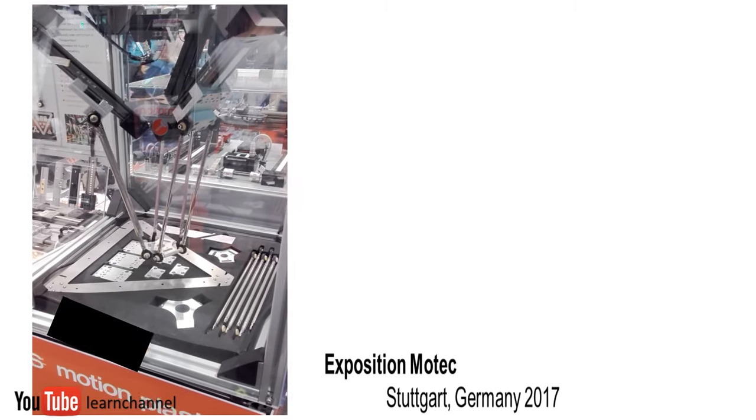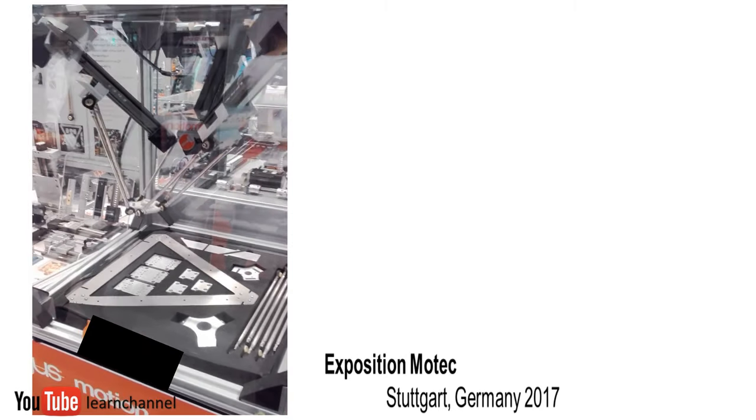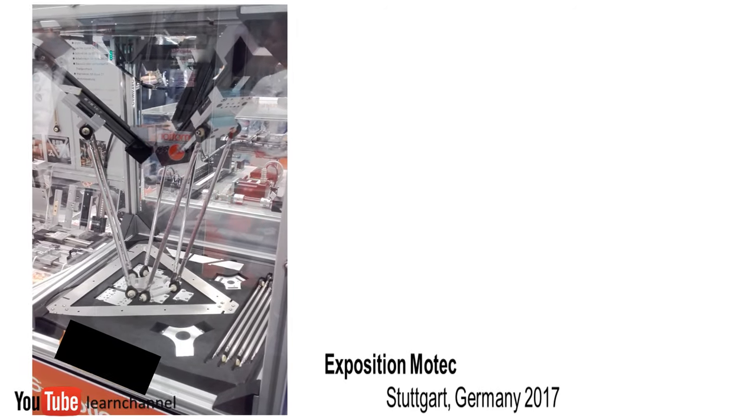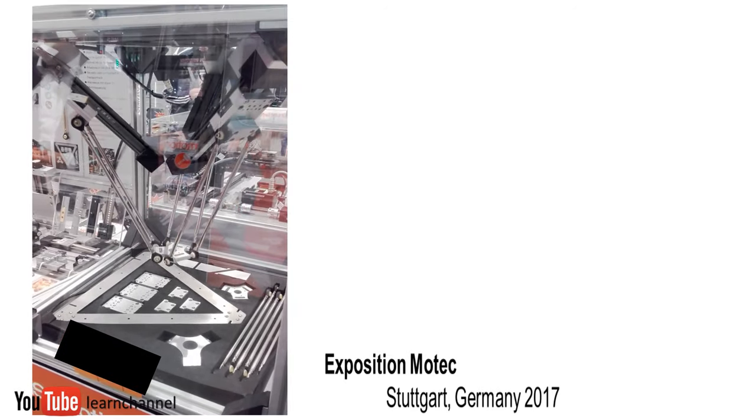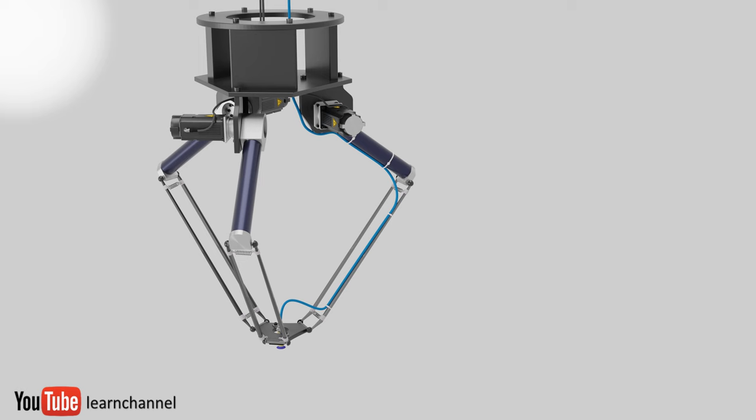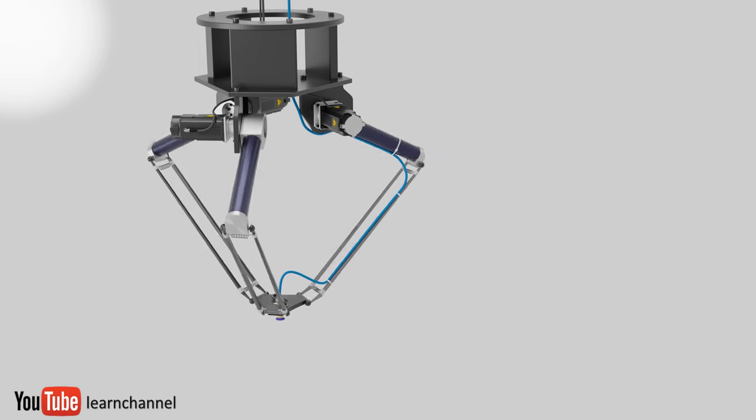In a parallel robot, unlike robots with serial kinematics, the arm parts are not built on top of each other. But several axes act directly on a gripper platform to make it capable to move. These axes have a common fixed base. The number of these axes is between three and six and determines the designation of the parallel robot.